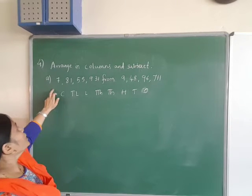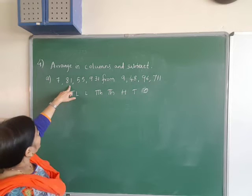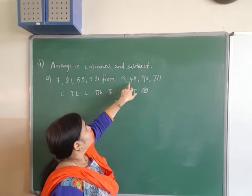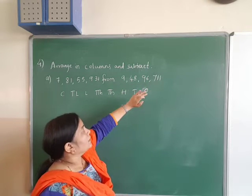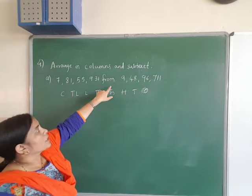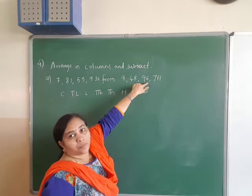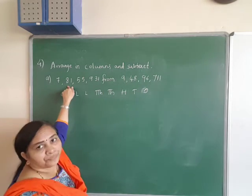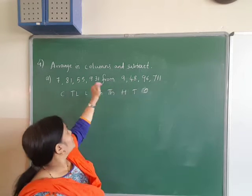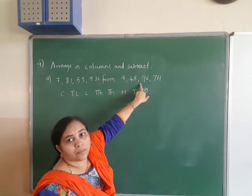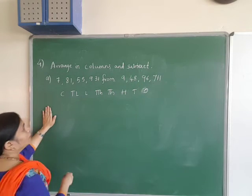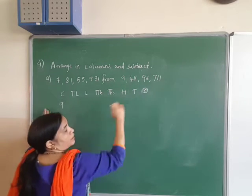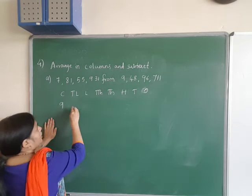The first question: 7,81 lakhs 55,931 from 9,48,96,711 — you have to subtract. From this number you have to subtract the other. So first write the place value chart: crore, 10 lakhs, lakhs, ten-thousands, thousands, hundreds, tens, ones. Then write the numbers according to place value.